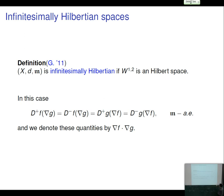We isolate the definition of infinitesimal Hilbertian spaces as those spaces where W^{1,2} is Hilbert. In this case, D⁺f(∇g) = D⁻f(∇g) for every pair of Sobolev functions, so we can write simply Df(∇g). Moreover, we can swap f and g: Df(∇g) = Dg(∇f). These identities can be taken as an abstract version of Riesz's theorem — on a Riemannian setting we can swap differentials and gradients thanks to the scalar product, and the same holds on spaces with W^{1,2} Hilbert.